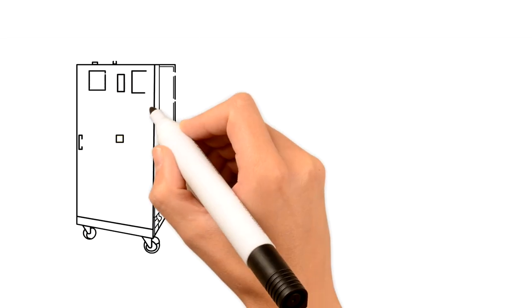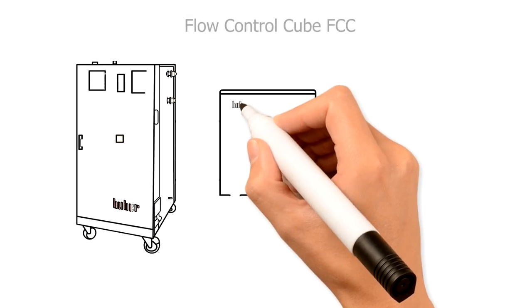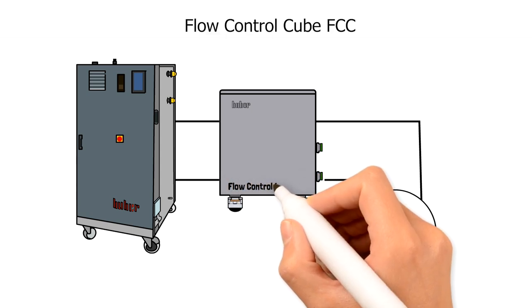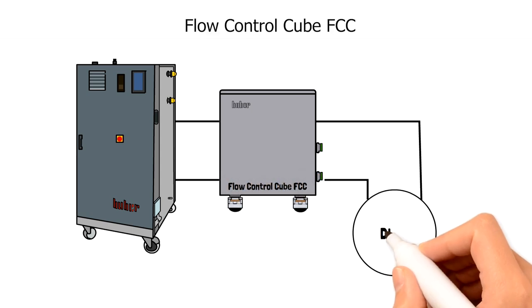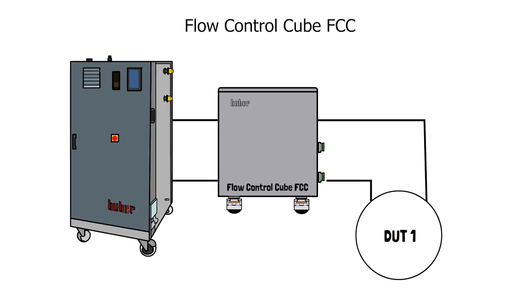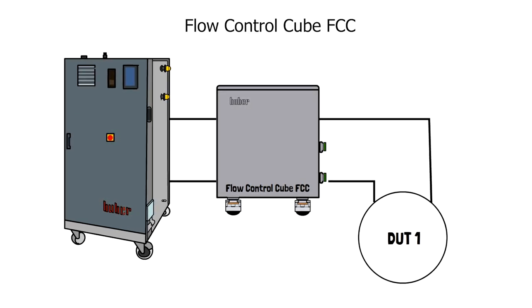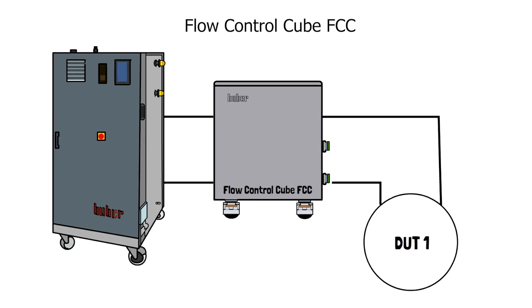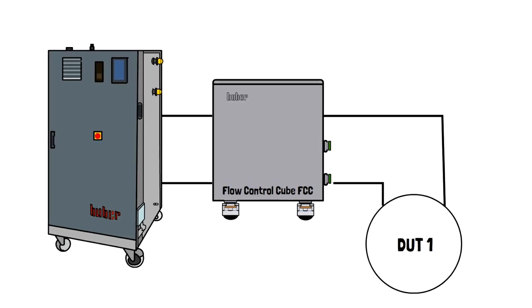For single circuit controls the flow control cube FCC is the best choice. The compact unit is simply integrated between the temperature control system and the test item and is directly connected to the Unimotive system. The FCC unit transmits the measured values for pressure and flow to the Unimotive system and thus ensures a precise pressure and flow rate control via the integrated bypass.